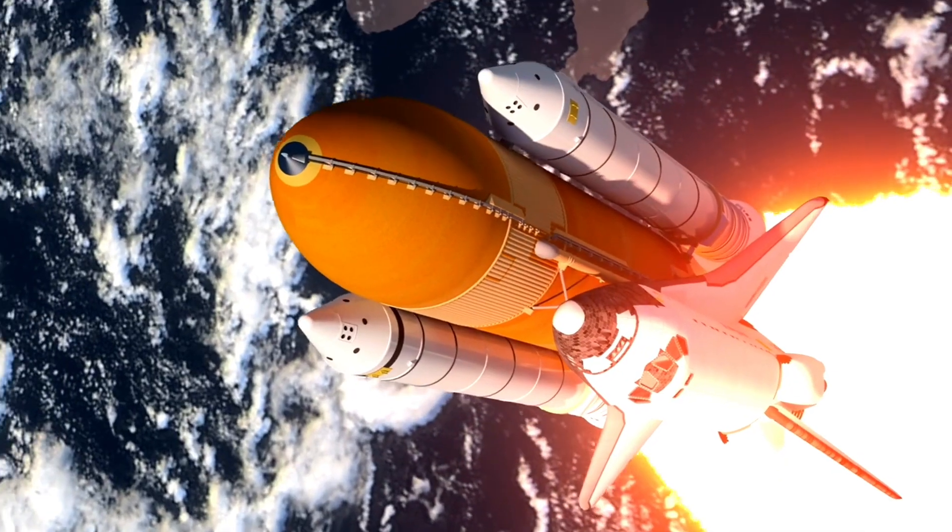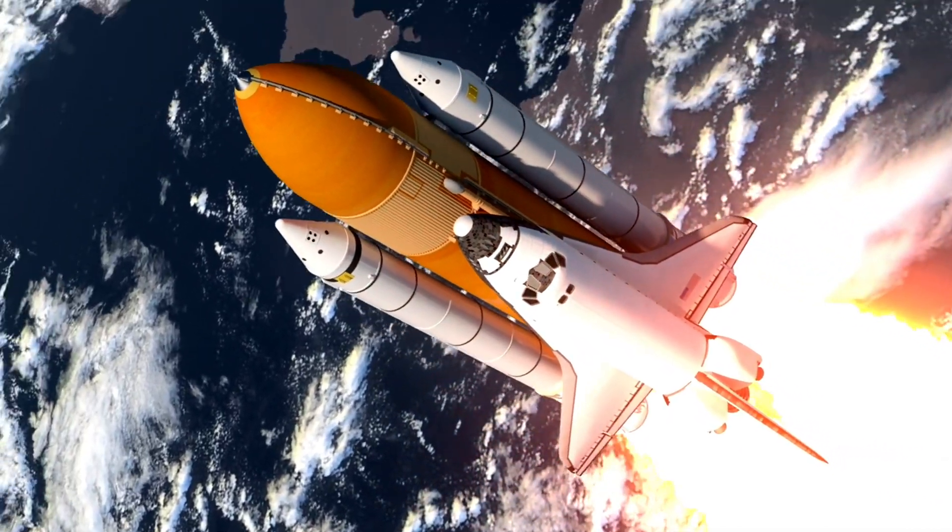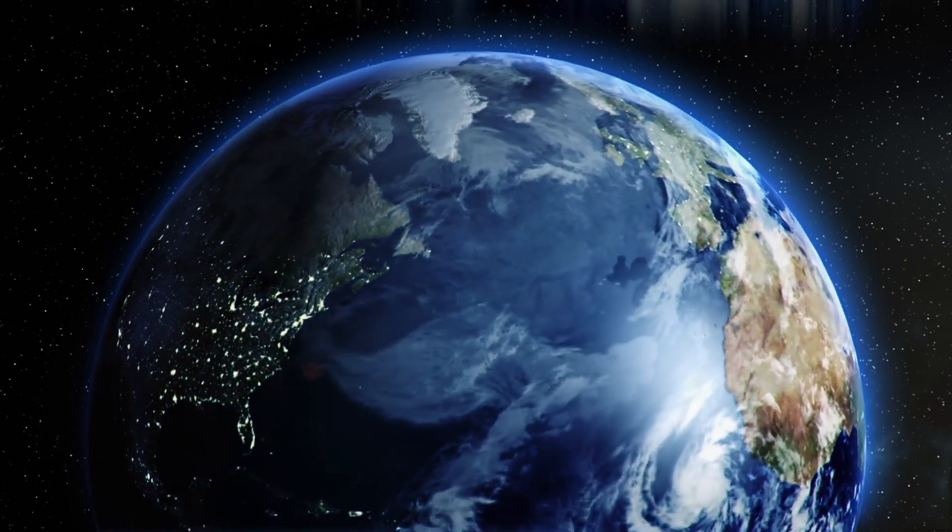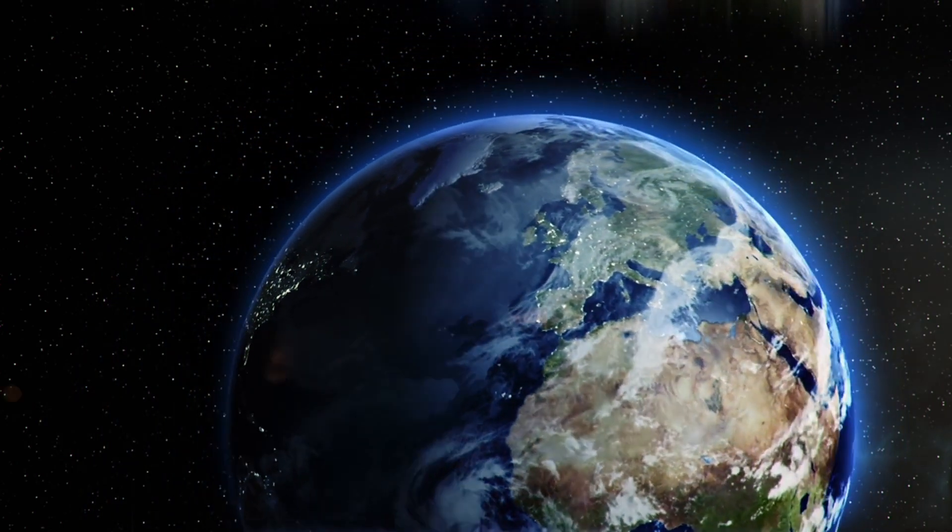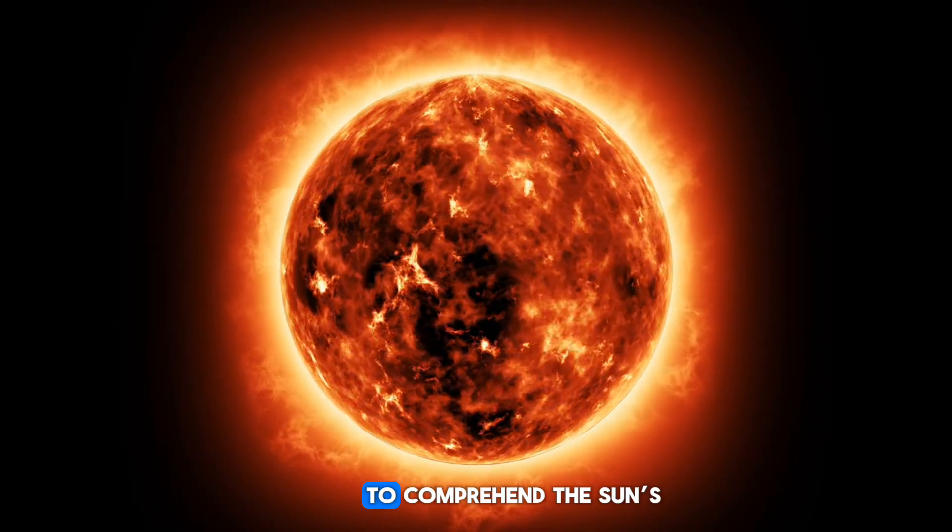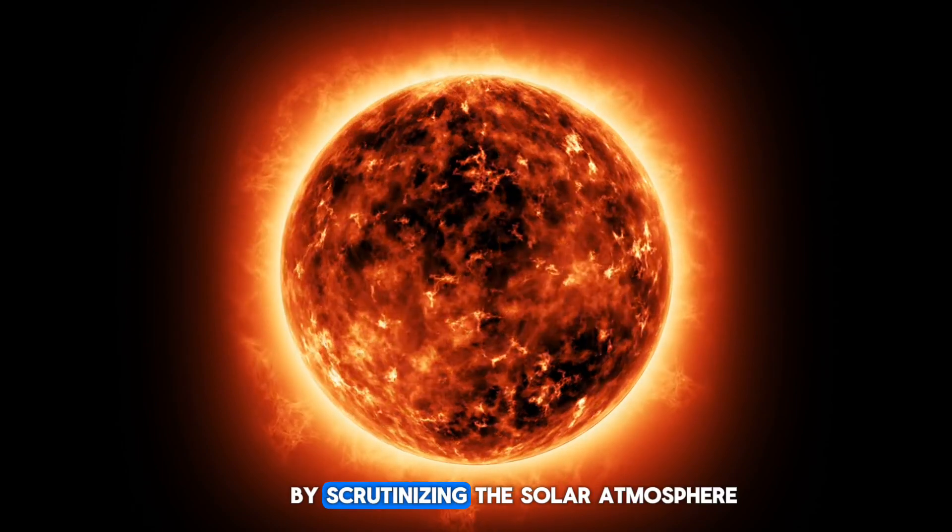This launch not only signifies the initiation of the mission but also heralds the dawn of a new era in solar observations. Upon reaching space, SDO maneuvers into a geosynchronous orbit, strategically positioned to have an uninterrupted view of the sun. Its primary objective: to comprehend the sun's impact on Earth and the solar system by scrutinizing the solar atmosphere with unparalleled precision.